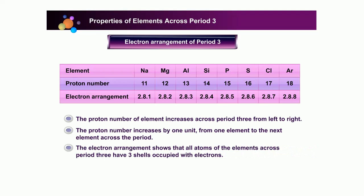The electron arrangement shows that all atoms of the elements across period 3 have three shells occupied with electrons.